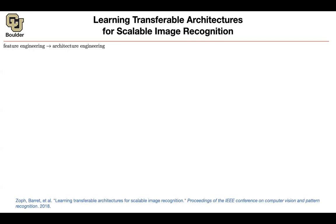Let's see how a human would approach architecture design. They come up with an idea for an architecture, train it, tweak hyperparameters on a validation dataset, apply the result to test data, and then take it to the real world. To do architecture engineering, we usually start with a smaller dataset like CIFAR-10. You come up with an architecture, and once you have it, you apply it to a bigger dataset like ImageNet. We're going to do a similar exercise, but let the machine do the work for us.